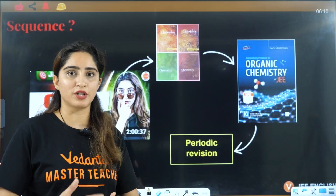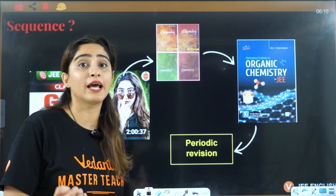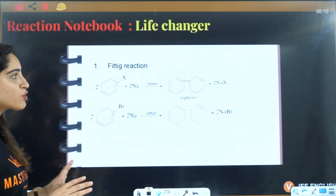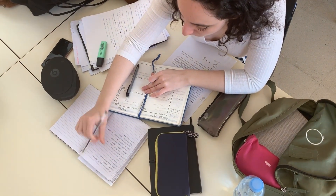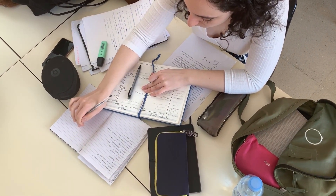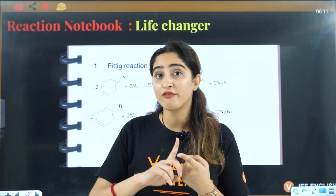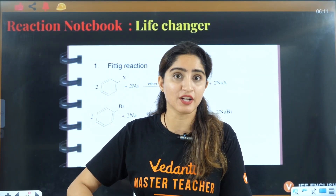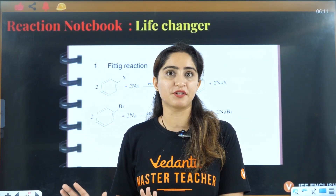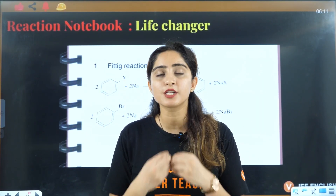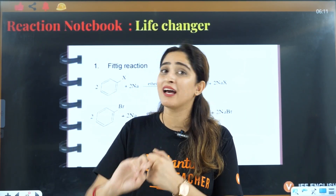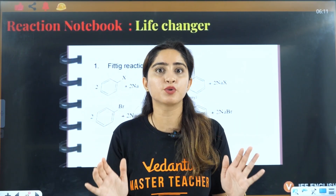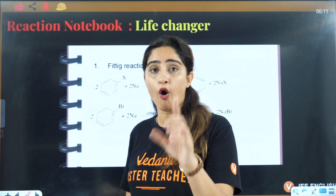After that, do periodic revision — after 15 days, after a month — and use mock tests for revision as well. Once you are done with all of this, start making short notes. Take a small diary in which you write all the naming reactions from each chapter, the concluding part with all reagents and their work. Once you have done naming reactions and important reagents on your tips, trust me, no one can beat you in organic chemistry. If reagents and naming reactions are on your tips and you have good knowledge of GOC, you will be able to solve all questions of organic chemistry.